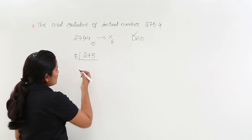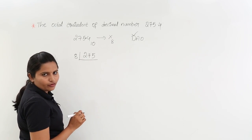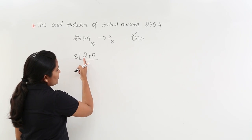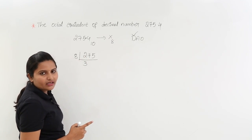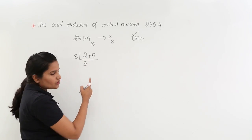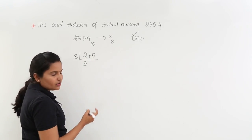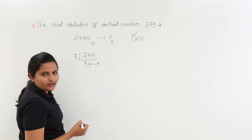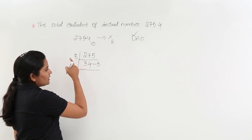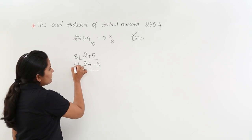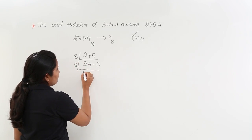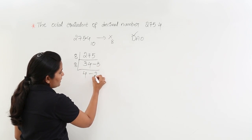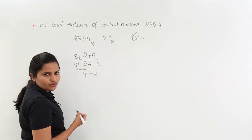8 times 3 is 24. After taking 24 out from 27, the remainder is 3. So we have 35. 8 times 4 is 32, so the remainder here is 3. Now 34 is greater than 8, so we need to perform division again with respect to 8. 8 times 4 is 32, and after taking 32 out from 34, the remainder is 2.